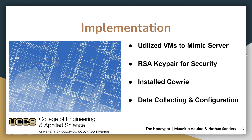So the next phase we moved into was implementation. Here we utilized virtual machines to mimic the server. We created two different virtual machines — one on Multipass and one using Hyper-V — and installed Ubuntu 18 Server on them. With that we were able to move into designing our honeypot, and we used an RSA key pair for security because it provides more security than a traditional password setup for SSH. Then we installed the Cowrie honeypot software, and from there moved to collecting data off of the VMs and configuring the honeypot to use that data. We used a variety of commands on the VMs to gather data that we could use to mimic those virtual machines on our actual honeypot.